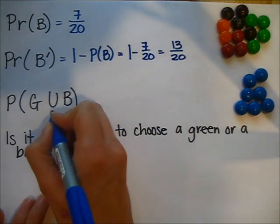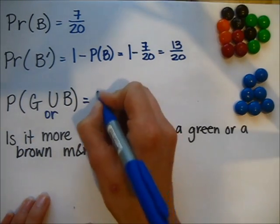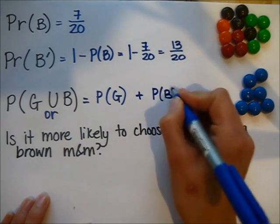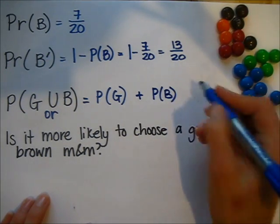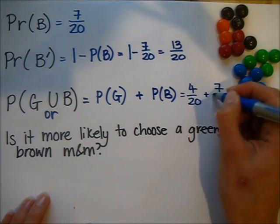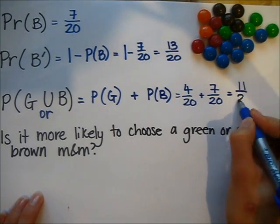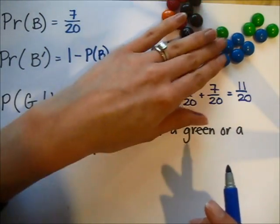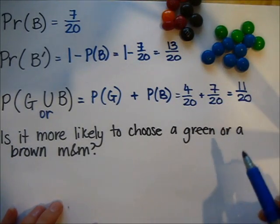This symbol means: what's the probability of getting a green or a blue M&M? We can break that up by adding together the probabilities — the probability of green plus the probability of blue. The probability of green is 4 twentieths, and the probability of blue is 7 twentieths, so altogether the probability is 11 twentieths. That makes sense because there are 11 M&Ms that are either blue or green, so the probability of choosing one of those two colors is 11 twentieths.